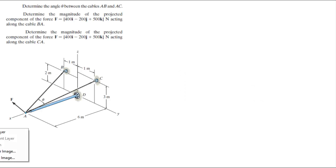Alright guys, now let's do these three problems at the same time which are: determine the angle between cables AB and AC, determine the magnitude of the projected component of the force which is given here in Cartesian vector form acting along BA and then acting along CA for the second part of the problem.